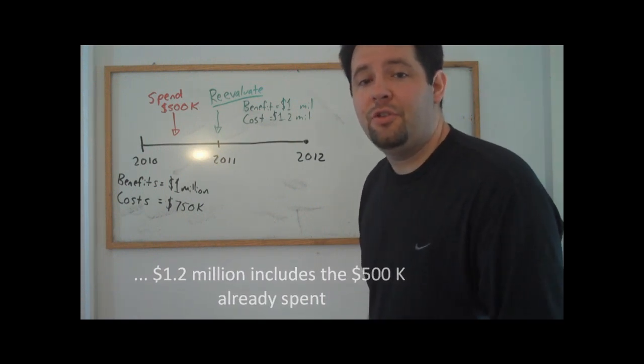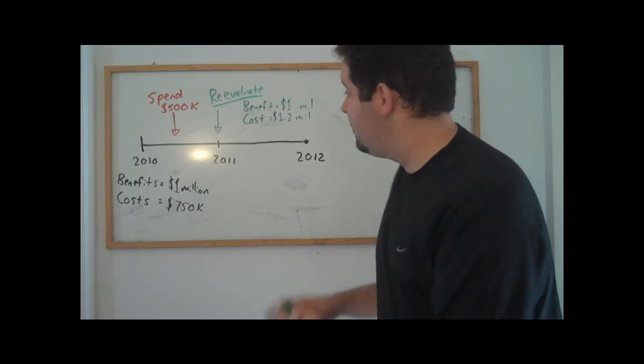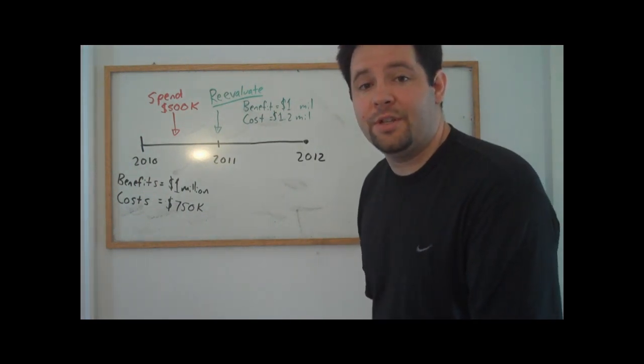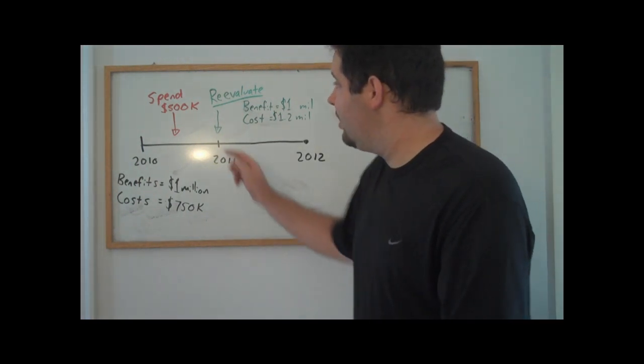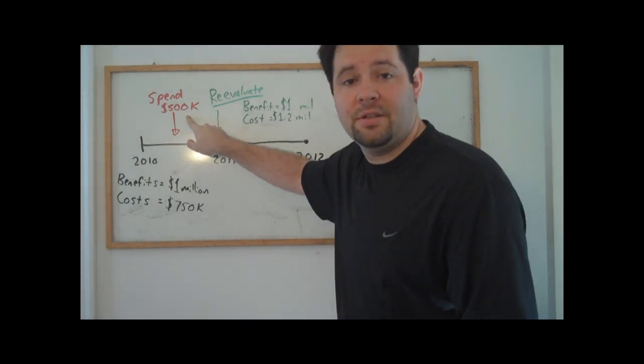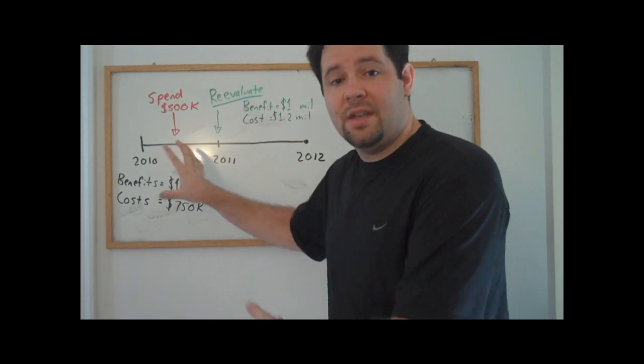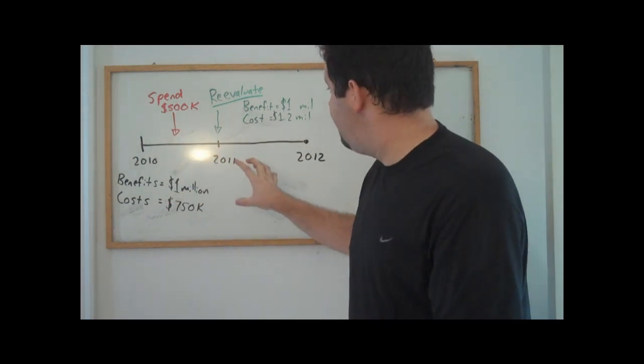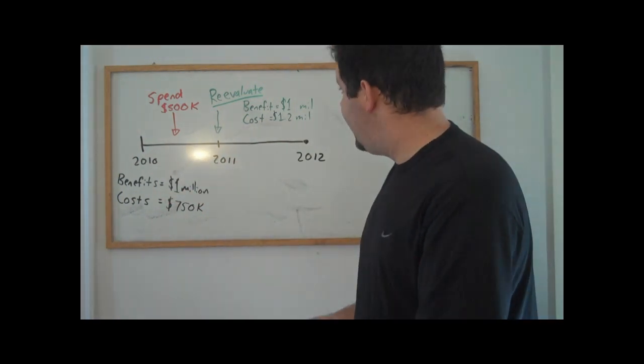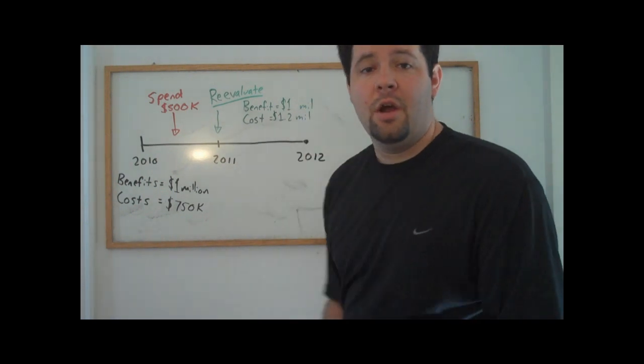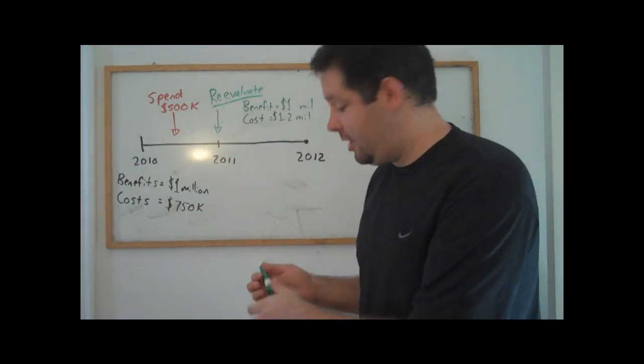The question is, do we proceed to finish the project? The project has no value if we just stop right now and we can't recover these $500,000 in costs. These $500,000 in costs are sunk costs, and the relevant benefits and costs to weigh at this re-evaluation stage are the ones proceeding forward to the end of the project.